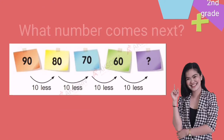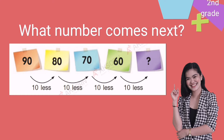So what number comes next? Last week we talked about counting on and counting back. Here we're going to discuss the number patterns. So 90 minus 10 is 80, 80 minus 10 is 70, and 70 minus 10 will be 60. So what comes next after 60? 60 minus 10 will be 50.